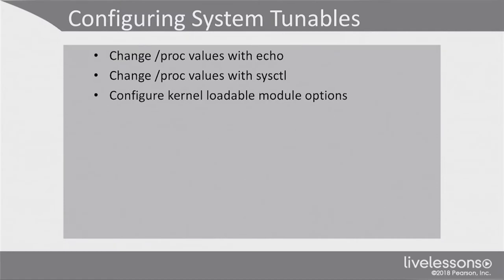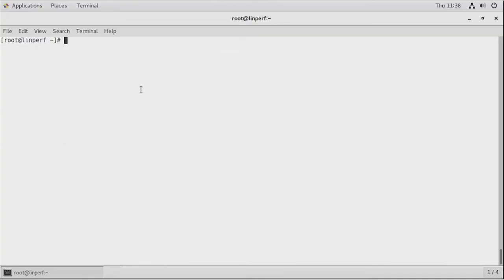Now let's have a look at configuration of system tunables. This configuration applies to three different parts of the operating system. We will look at the proc values that can be manipulated using the echo command, which sets the new value at runtime but not persistently. Next we will look at how to make changes persistently using sysctl, and also at kernel loadable module options. The most essential part of the Linux operating system regarding performance optimization is the proc filesystem.